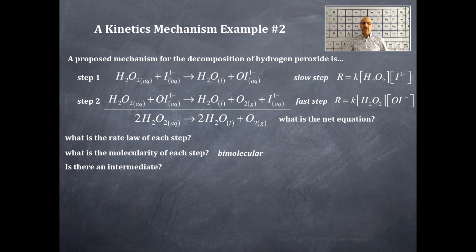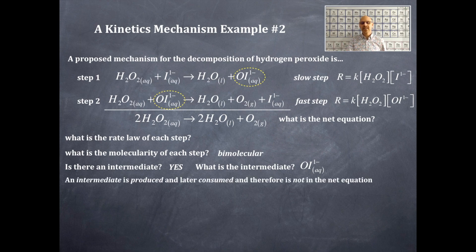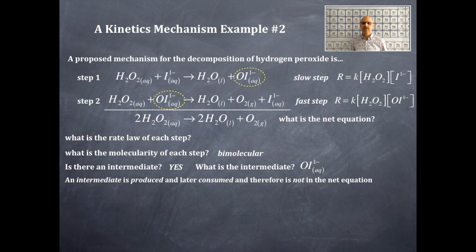Is there an intermediate? An intermediate is produced and later consumed, and therefore is not in the net equation. Yes, there is one. The intermediate is OI⁻. It appears on the product side in step one — where it is produced — and on the reactant side in step two — where it is consumed. Notice that this intermediate does not appear in the net equation.